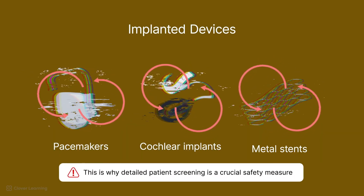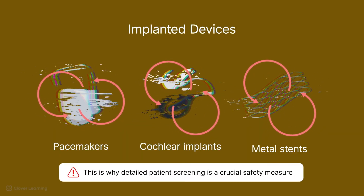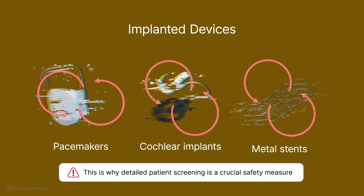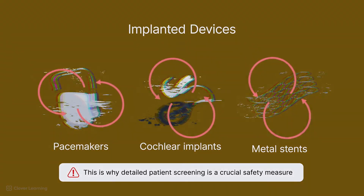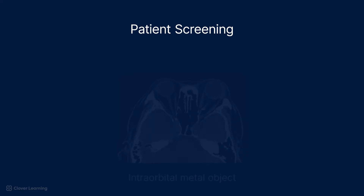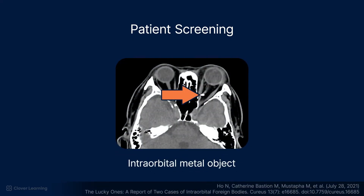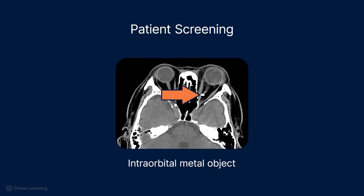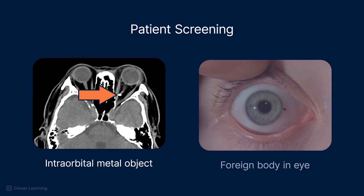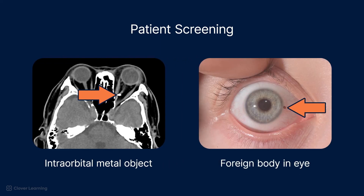This is why detailed patient screening processes for these devices is a crucial safety measure. In addition to screening for medical implants, it is also essential to screen for intraorbital foreign bodies. Metal fragments in the eyes can move or heat up during an MRI scan, causing severe damage to the eye. Patients with a history of metalworking or those who might have metallic fragments in their eyes must undergo x-rays to rule out the presence of foreign bodies before an MRI scan.